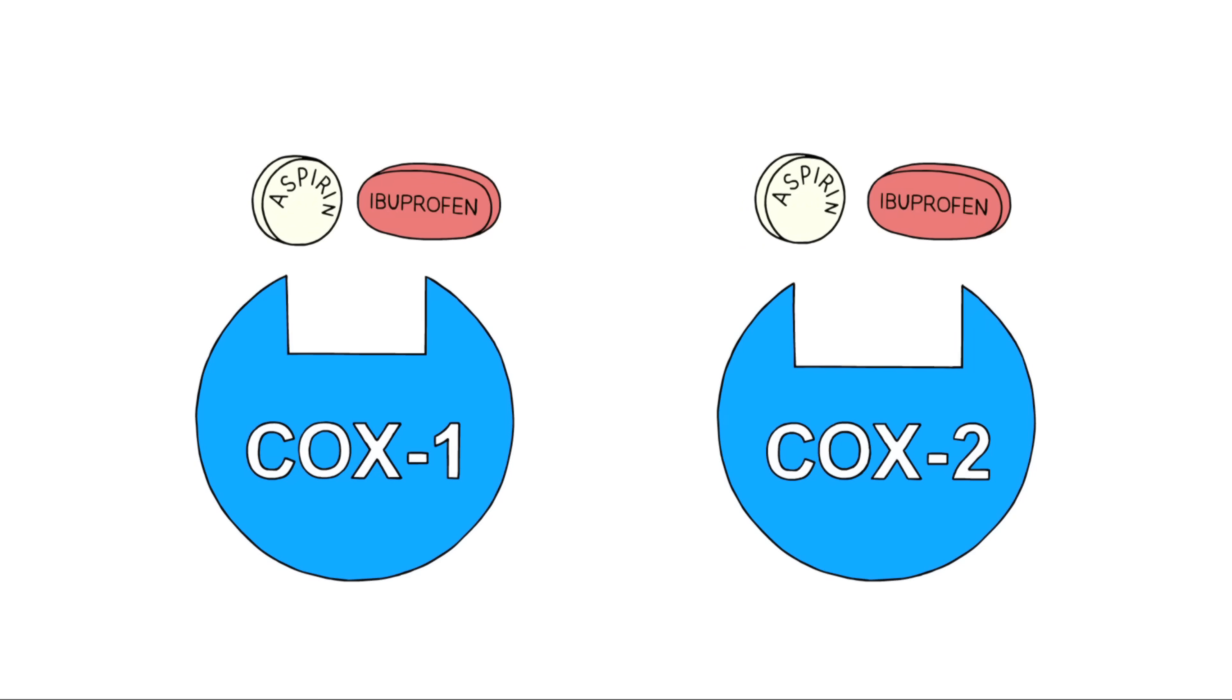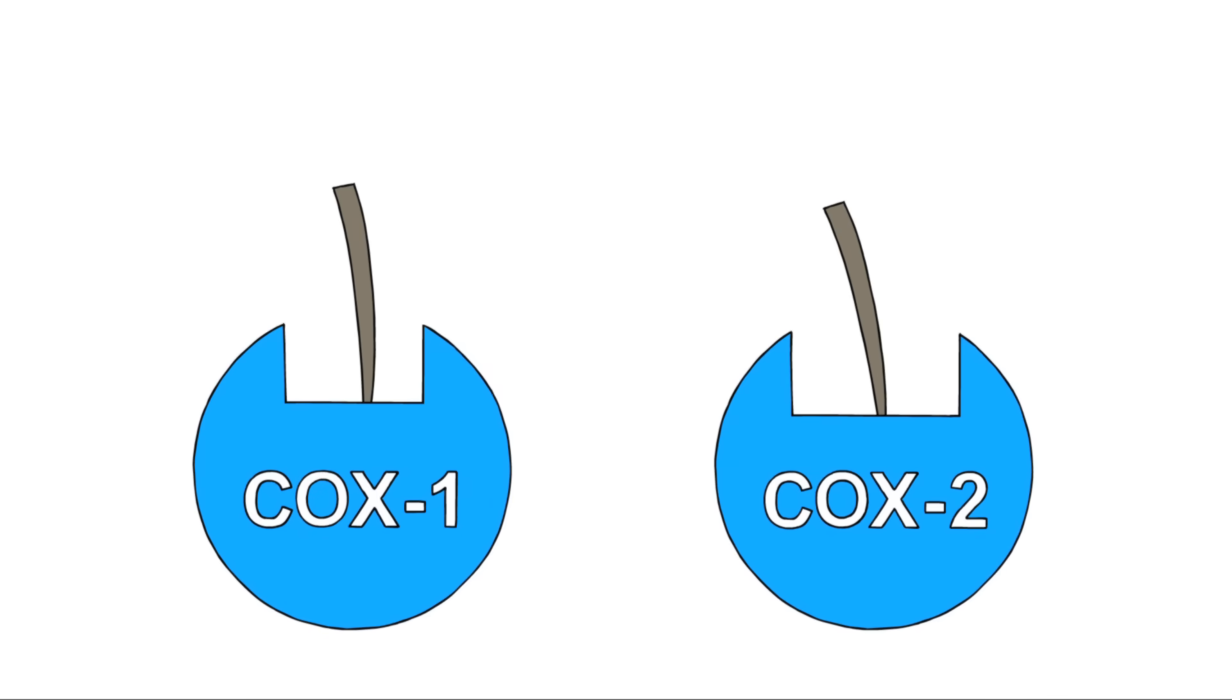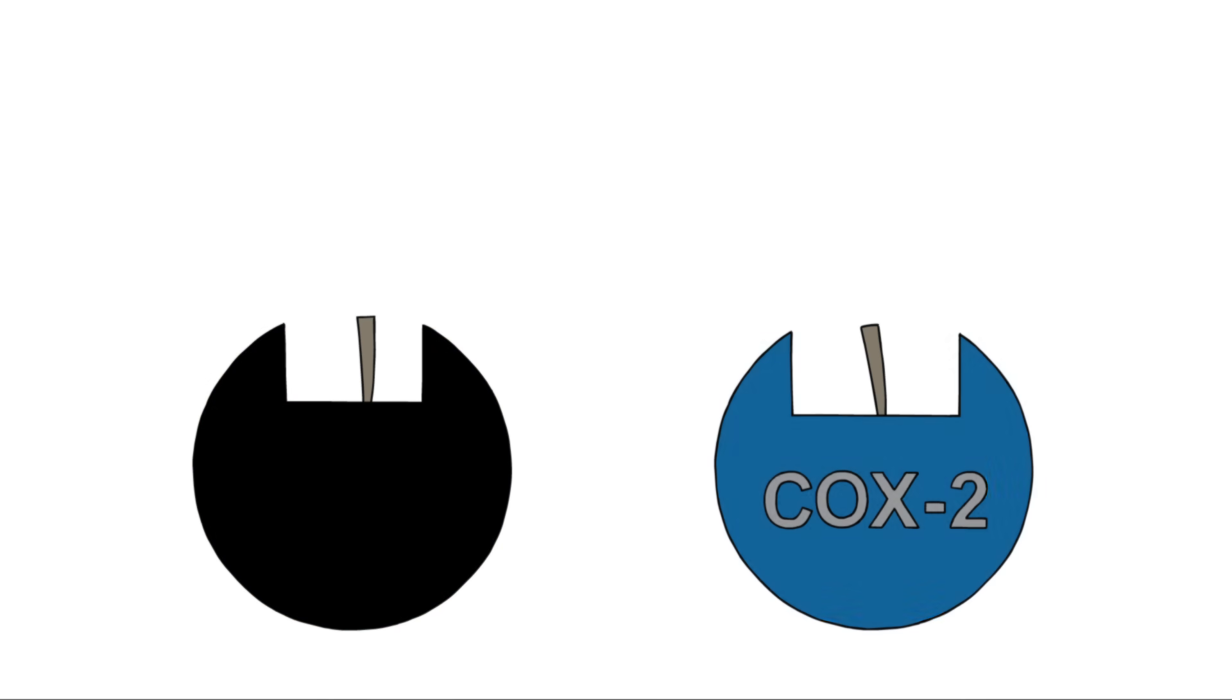So they work differently. Aspirin acts like a spine from a porcupine. It enters the active site and then breaks off, leaving half of itself in there, totally blocking that channel and making it impossible for the arachidonic acid to fit. This permanently deactivates COX-1 and COX-2.